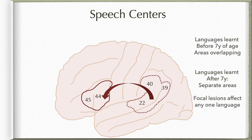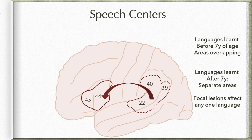Some interesting factors: if you are learning different languages before the age of seven years, that information is stored in an overlapping area. Whereas if you learn languages after the age of seven years, different languages are stored in separate areas. This actually works as an advantage because if there is a focal lesion involving any one part of that area, you will lose the ability for only that one language but other languages will be spared.